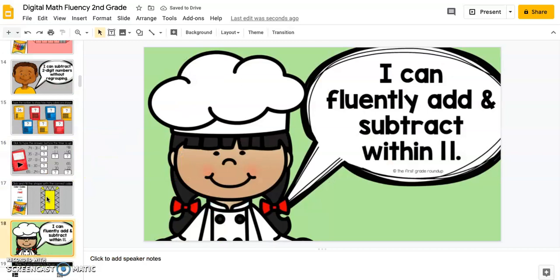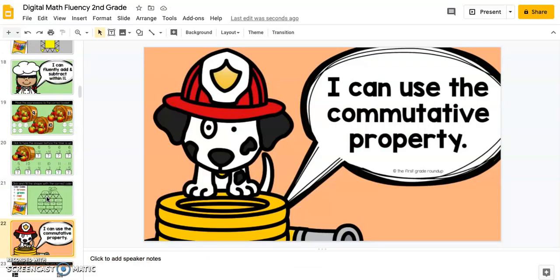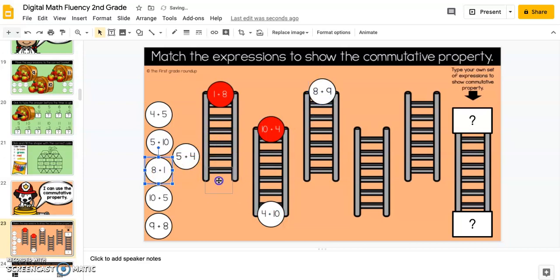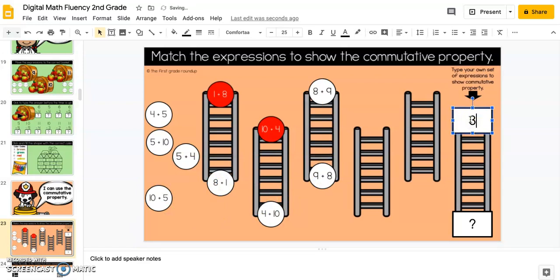There are basically very similar activities for each of the skills. This one, they're going to click and drag to find commutative property matches, and then they'll click here to type their own.